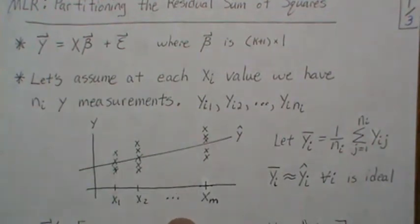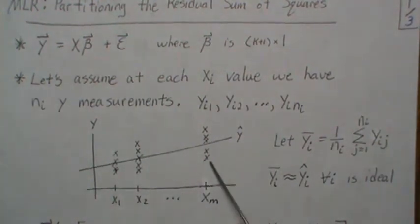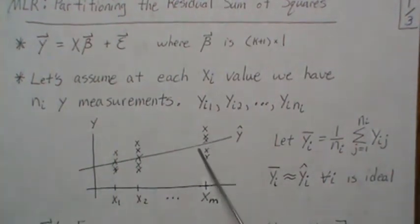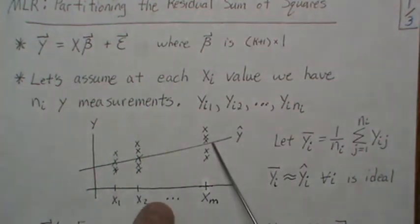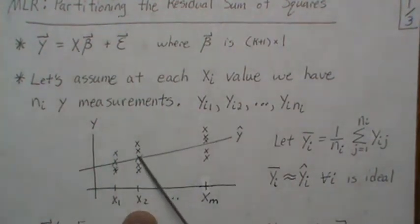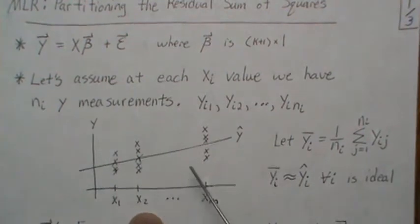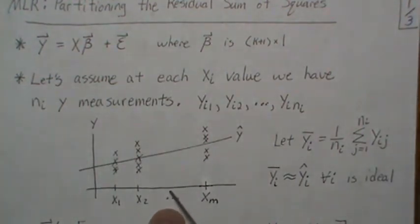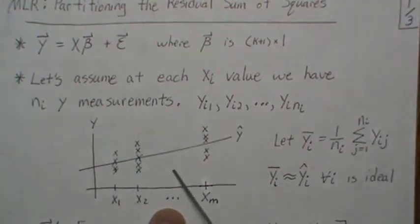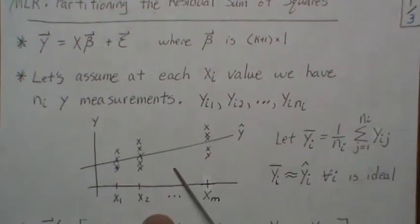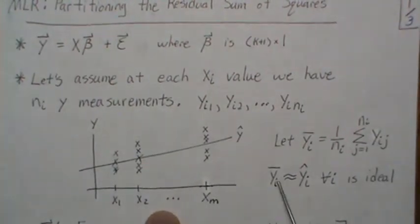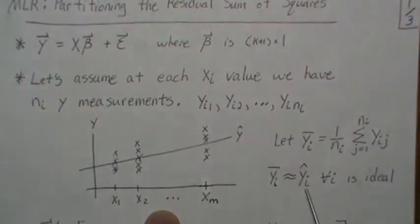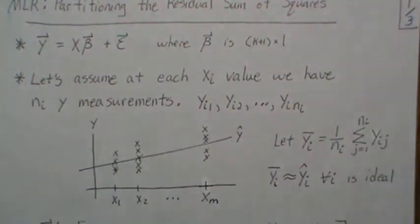If the mean of the y's is really close to the fitted value, that means our model fits the data well. If the mean at one of the x's is much different than the fit, that's not ideal. So if all these means equal the fitted values for all i, that's ideal - that's perfect.